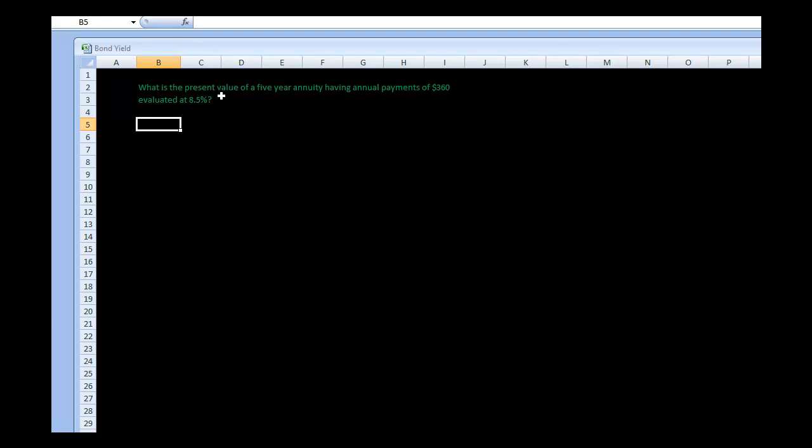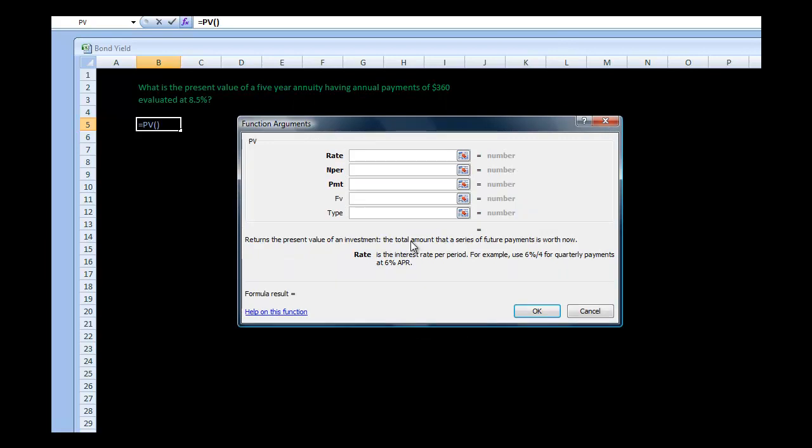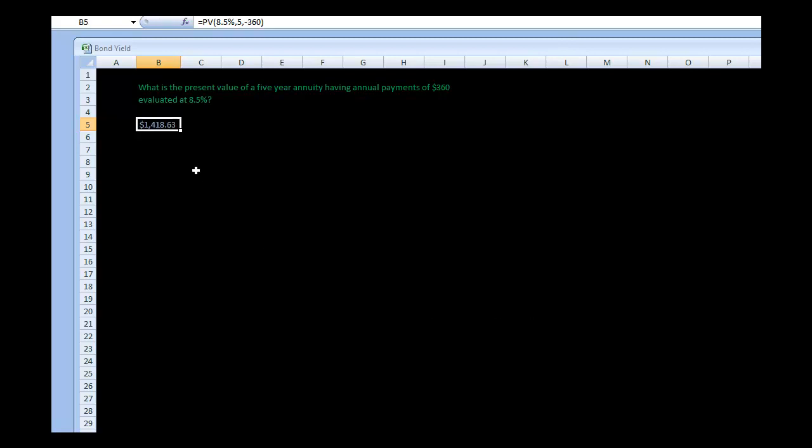So let's solve this problem. We want to calculate a present value. So with Excel, we'd need to open up a function box for present value, and click OK. And we're going to put in our rate, and we can put in 8.5%. And we're going to put in our term, which is five years. And then our payments is a negative because it's out of our pocket. It's $360 in each of the five years. And click OK. And there you have the answer.